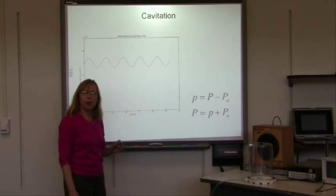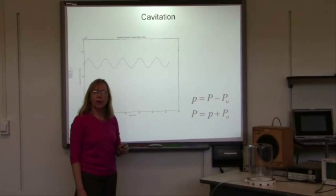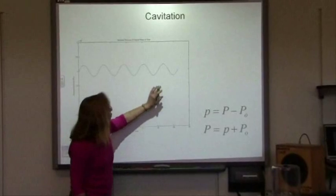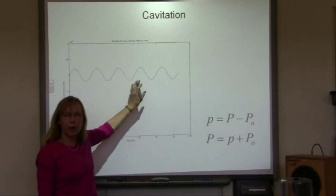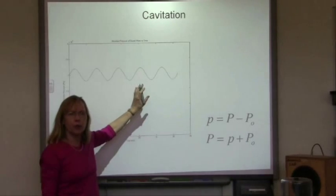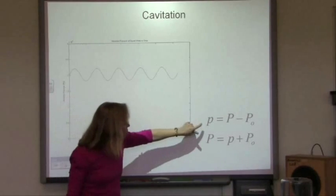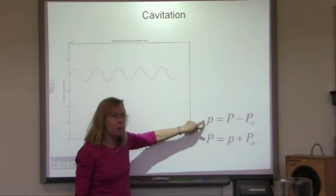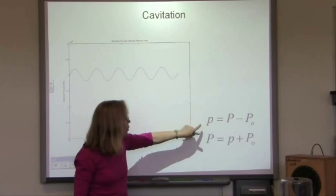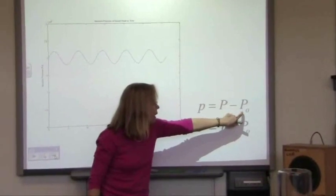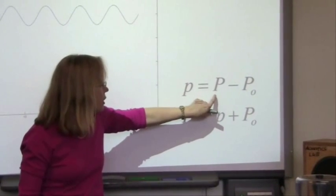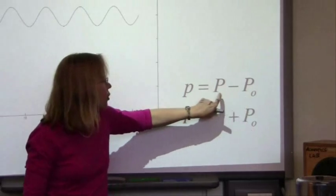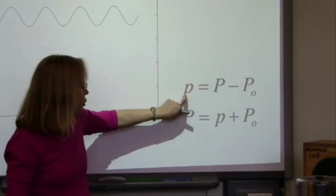This is a quick, simple demo that has to do with cavitation. For the most part, we've graphed the sine wave of a monofrequency pressure wave by graphing the acoustic pressure. The acoustic pressure oscillates above and below zero because it's defined in terms of the ambient pressure as the instantaneous total pressure minus the ambient pressure. So it's relative to ambient pressure.